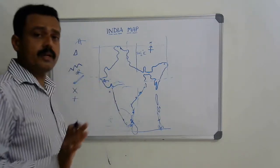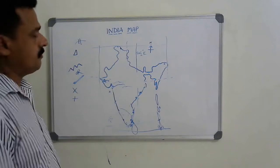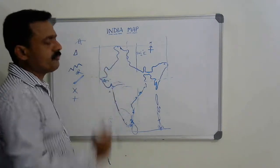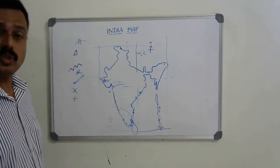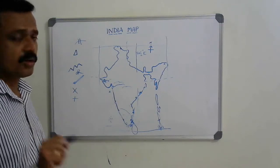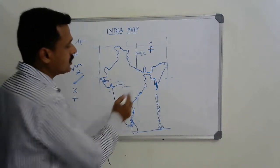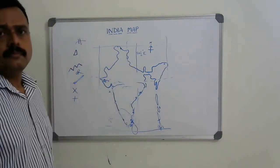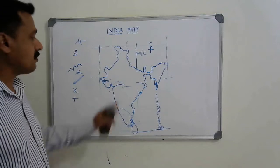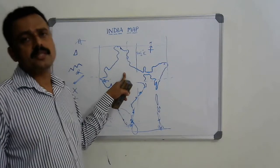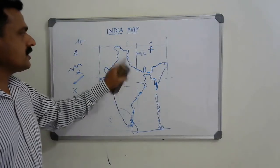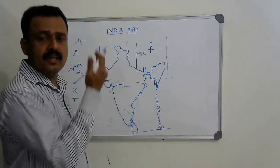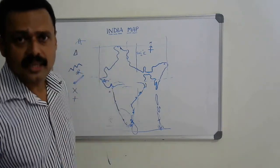Instead of asking a river name directly, they may ask 'Sorrow of Bengal' — you should know that River Damodar is called the Sorrow of Bengal. These are application-level and understanding-level questions in the map section. Study this and get good marks. All the best, thank you.